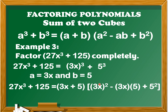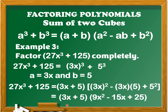Next, for a squared we have the quantity of 3x squared, minus ab which is 3x times 5, plus 5 squared. So a squared equals the quantity of 3x squared, minus 3x times 5, plus 5 squared. Simplifying: the quantity of 3x plus 5 times the quantity of 9x squared minus 15x plus 25. Therefore, 27x cubed plus 125 equals the quantity of 3x plus 5 times the quantity of 9x squared minus 15x plus 25.